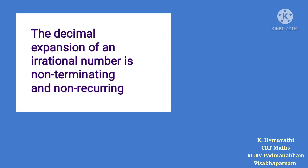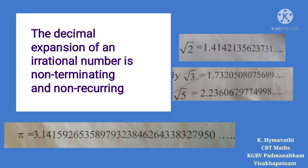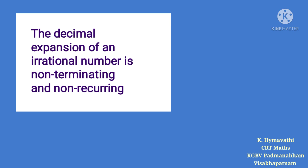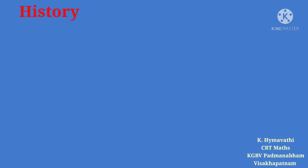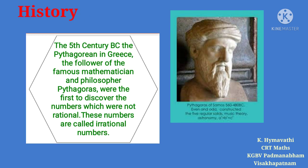The decimal expansion of an irrational number is non-terminating and non-recurring. In the 5th century BC, the Pythagoreans in Greece, followers of the famous mathematician and philosopher Pythagoras, were the first to discover numbers which are not rational. These numbers are called irrational numbers.